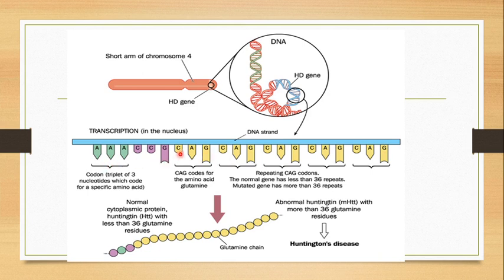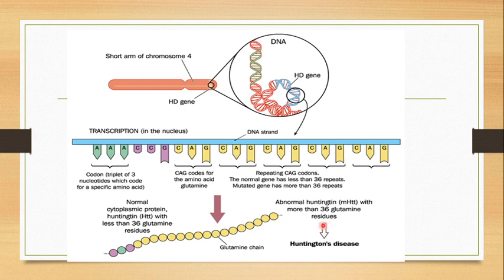The CAG codon specifies the amino acid glutamine. Comparing the normal huntingtin protein with the abnormal huntingtin protein: in normal individuals, there are usually 36 or fewer glutamine residues produced by these CAG repeats. In Huntington's disease, due to mutation and expansion of the repeats, more than 36 glutamine residues are present in the huntingtin protein. With increasing glutamine residues, the resulting protein is no longer normal — it becomes an abnormal protein.